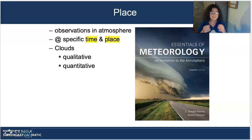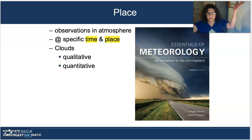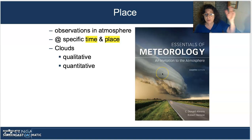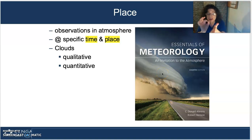When we're talking about observations in a specific time and place, let's start with place — broad first, then very specific. We might need to know where a cloud is, both generally to warn people and very specifically for precise identification.